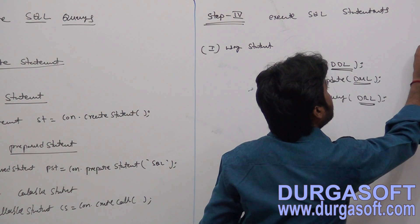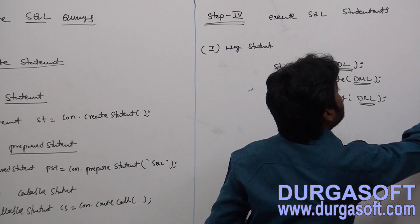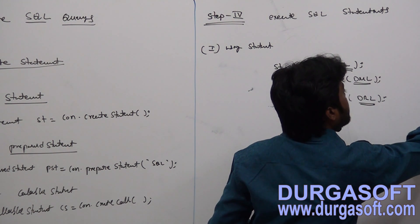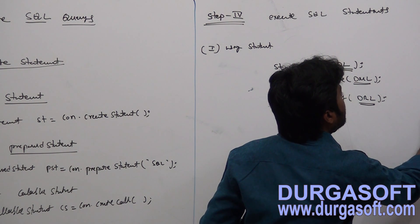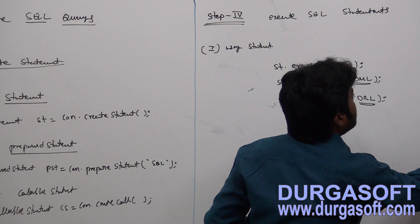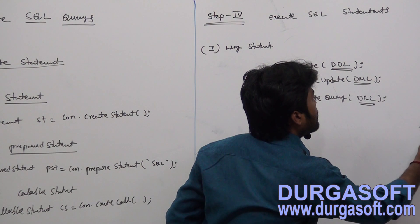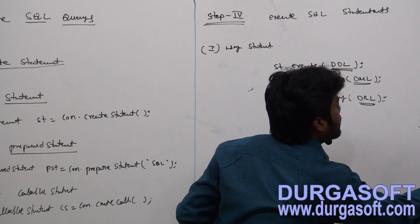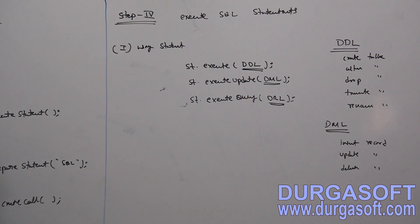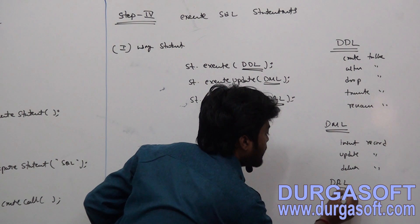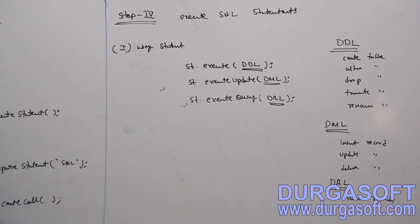DDL means Data Definition Language — it includes operations like CREATE TABLE, ALTER TABLE, DROP TABLE, TRUNCATE TABLE, and RENAME TABLE. DML includes INSERT record, UPDATE record, and DELETE record. DRL operations are data retrieval operations — DRL statements are SELECT records.